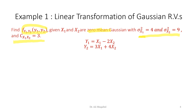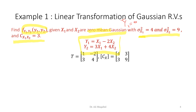These are linear transformations, so we need to find the mean of Y1 and Y2. Since the inputs X1 and X2 are zero-mean, any linear transformation will also result in zero mean — so Y1-bar equals zero and Y2-bar equals zero. To build the transformation matrix T, we read off the entries: from Y1 and Y2, the coefficients are 1, minus 2, 3, and 4.